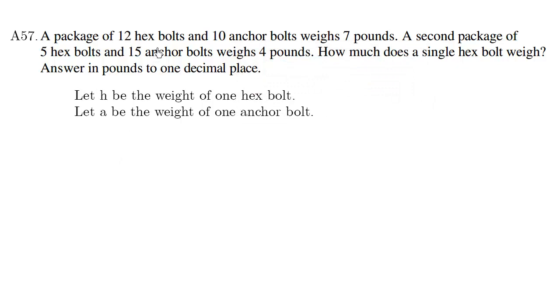Now if we re-read the question, 12 hex bolts and 10 anchor bolts weigh 7 pounds. So we know that 12H, where each of these is the weight of one hex bolt, plus 10A is equal to 7. Because individual weights multiplied by 12 of these is going to become a total weight of 7 pounds.